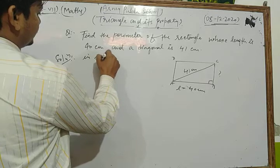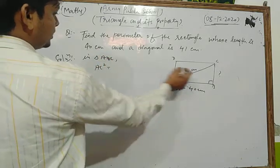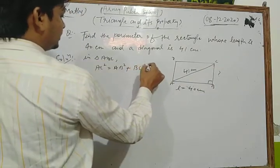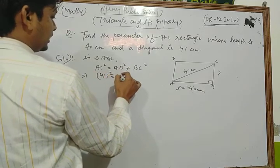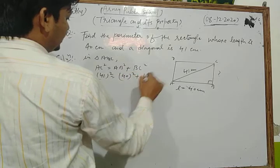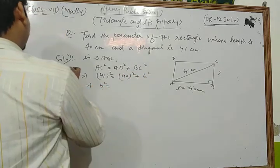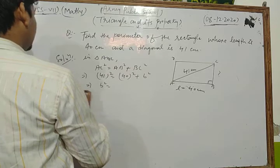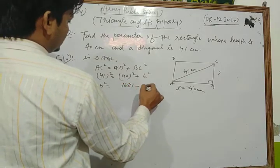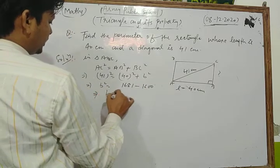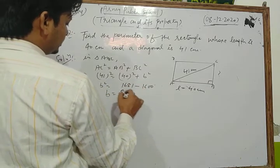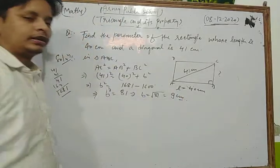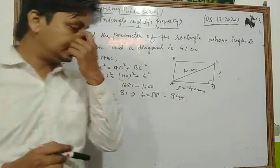In triangle ABC: AC² equals AB² plus BC², meaning 41² equals 40² plus b². So b² equals 1681 minus 1600, which gives b² equals 81. Therefore the breadth b equals the square root of 81, which is 9 centimeters.